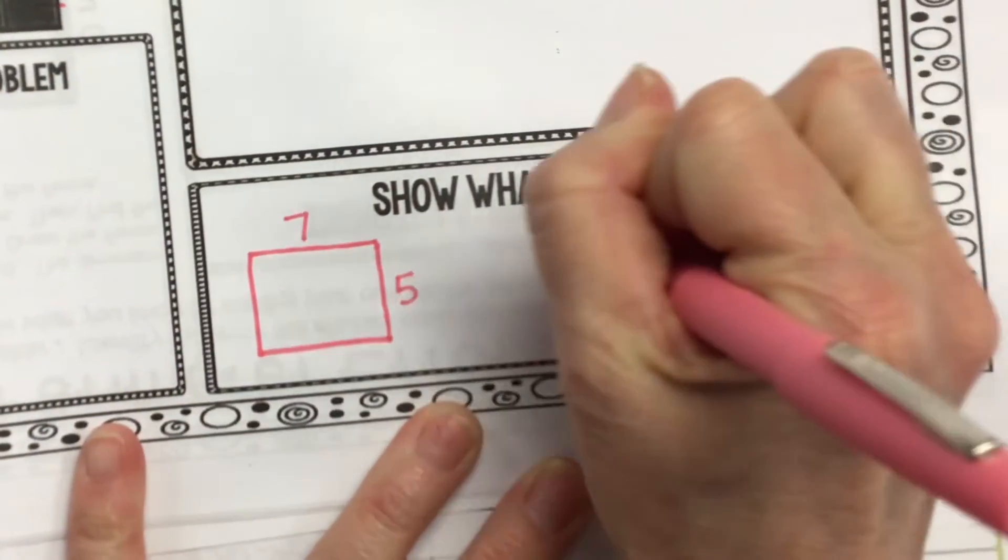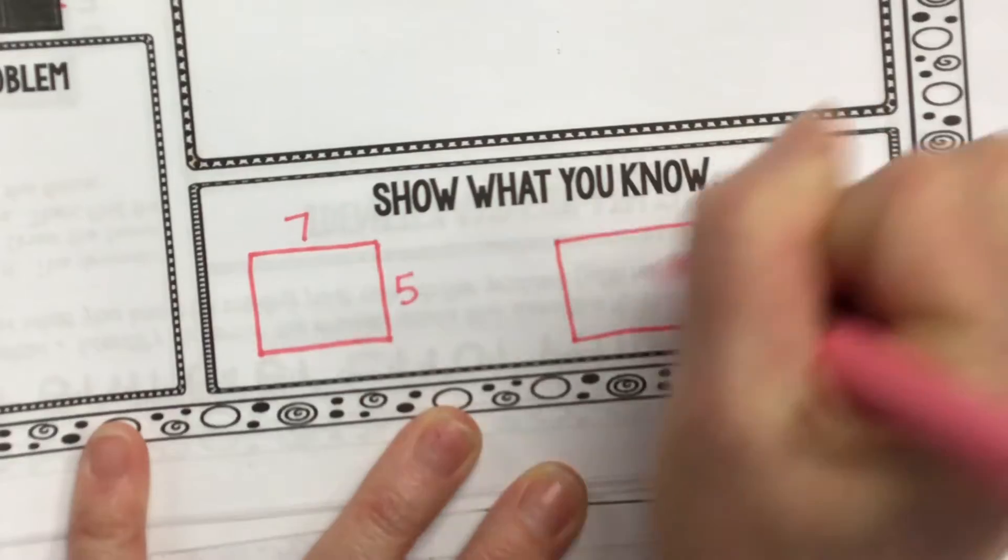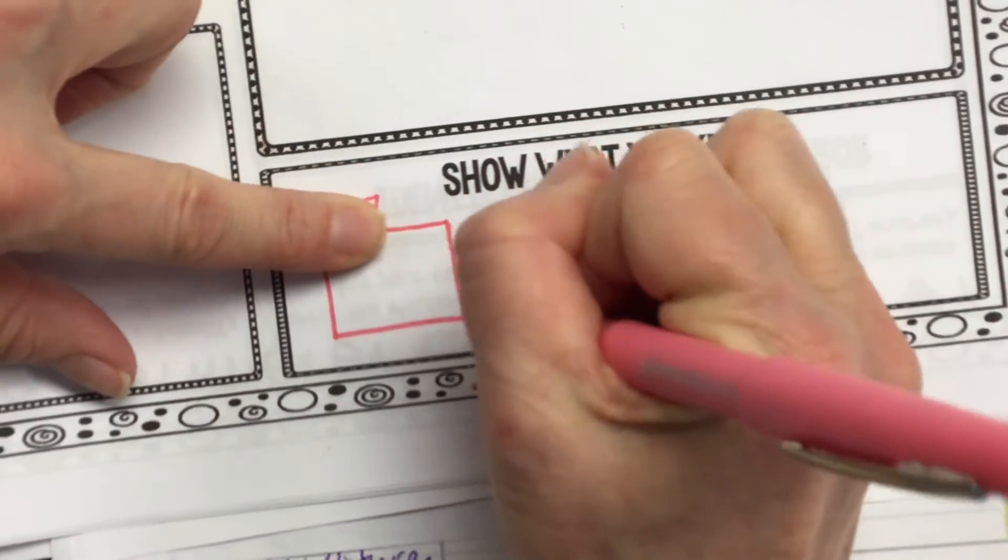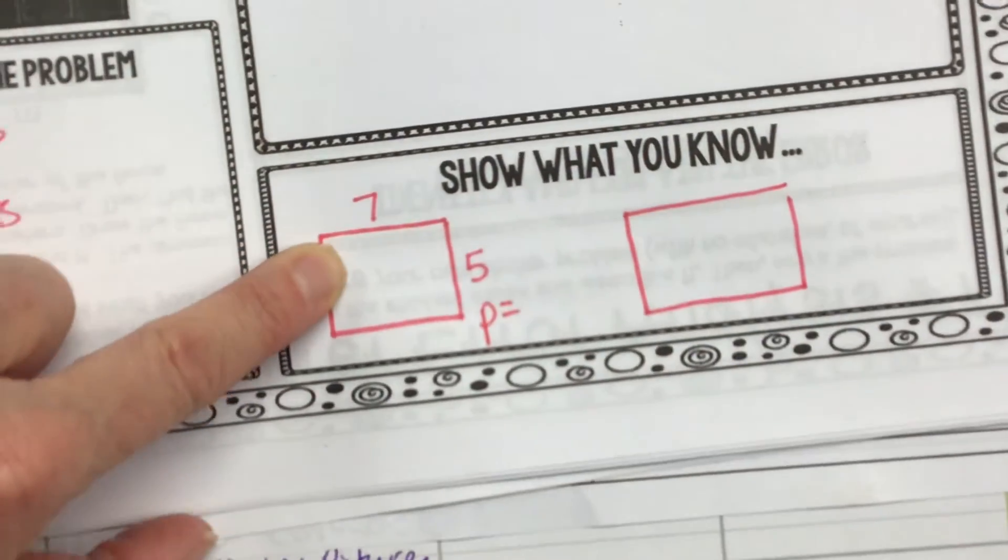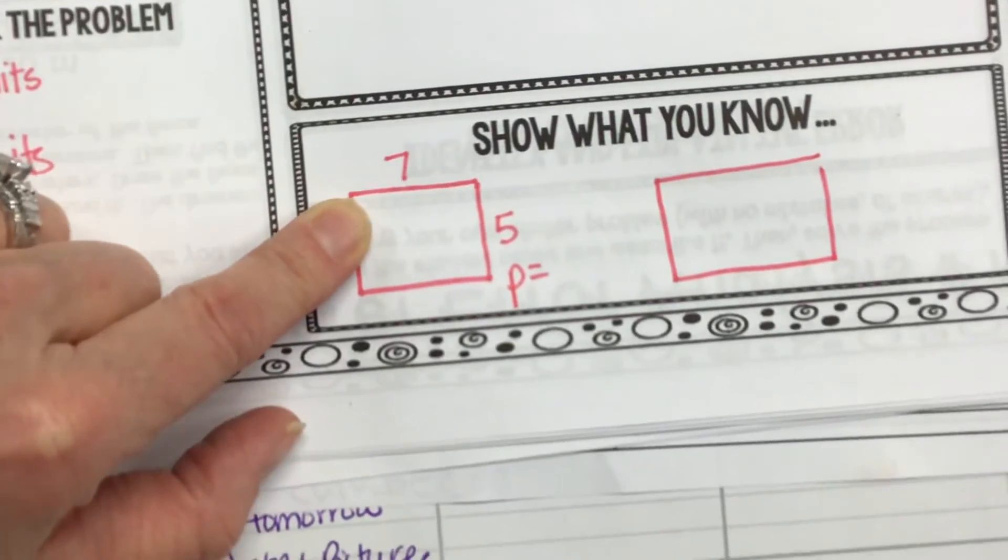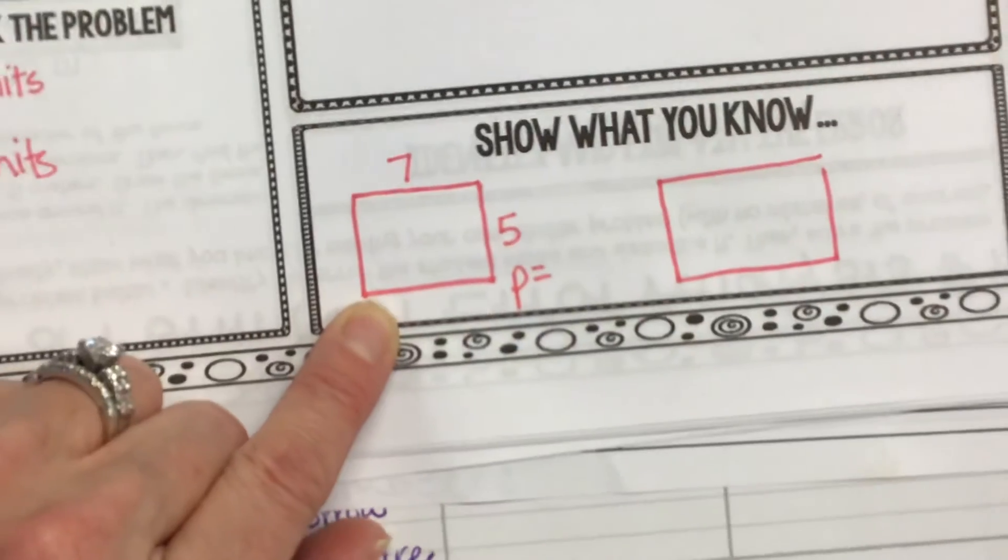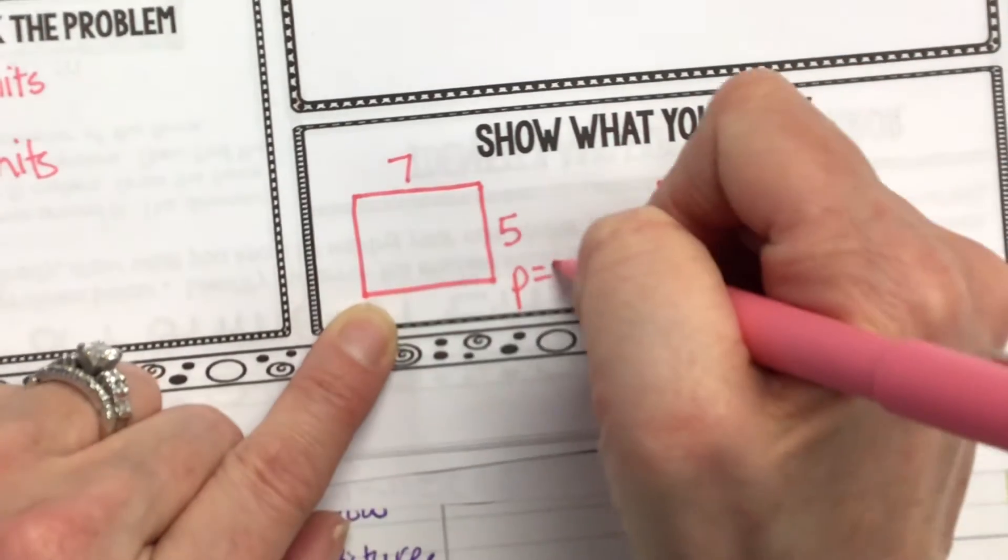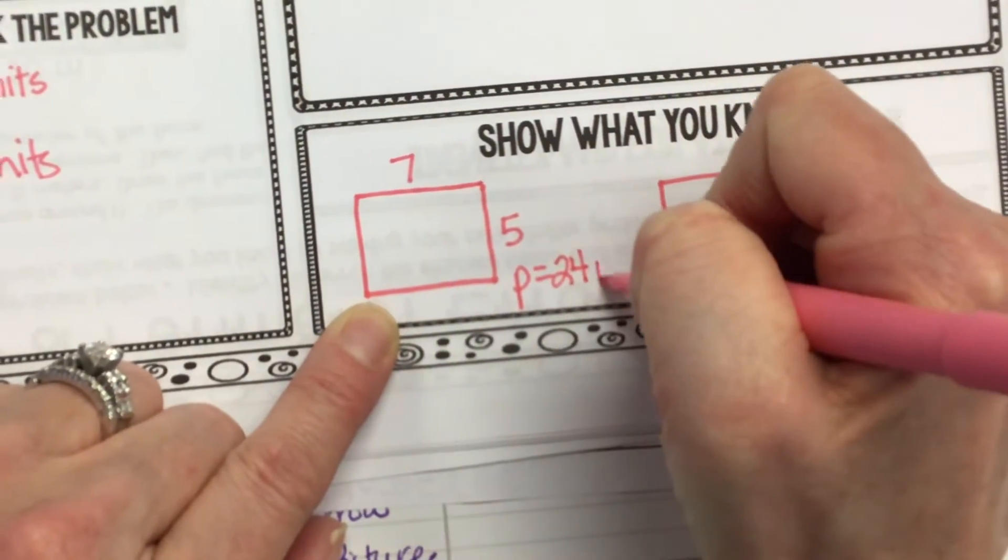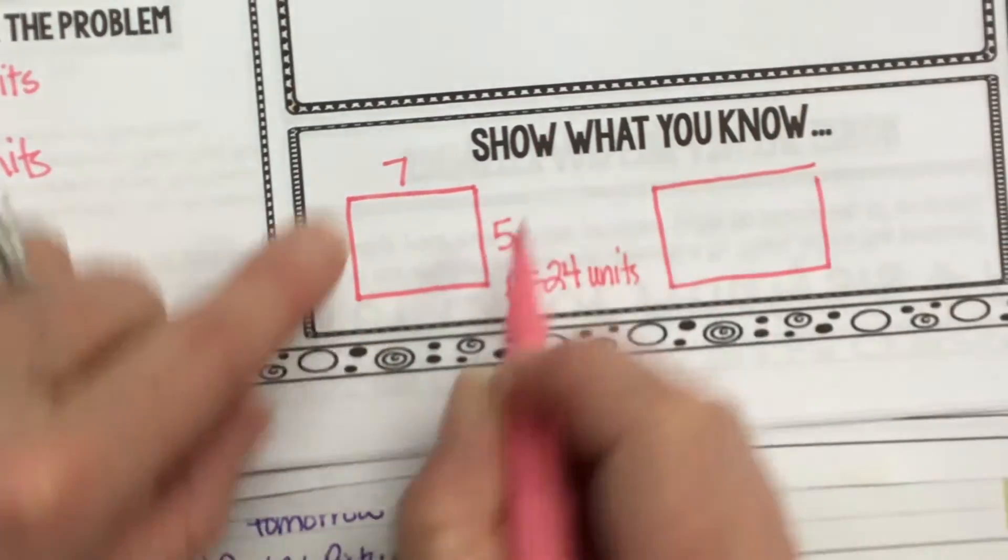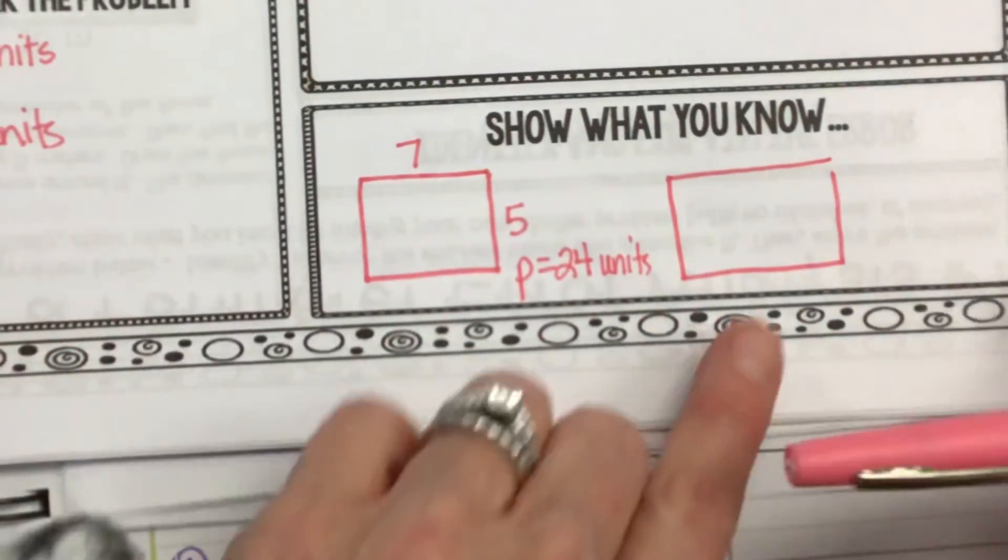Raise your hand and tell me what rectangle did you draw? First of all, tell me the perimeter of my rectangle. What was the perimeter of this rectangle? What's the perimeter of this one? What's the formula? Levi.